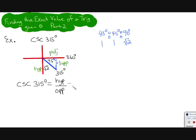So now, my answer is square root of 2 over negative 1. This reduces to negative square root of 2. And that is my answer. Cosecant of 315 is negative square root of 2.